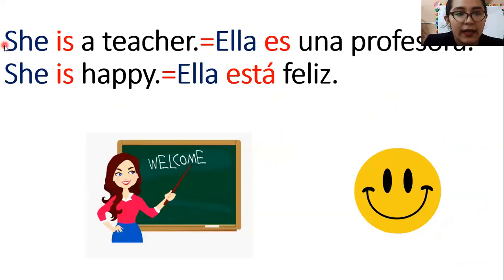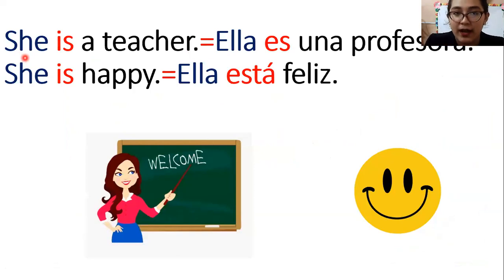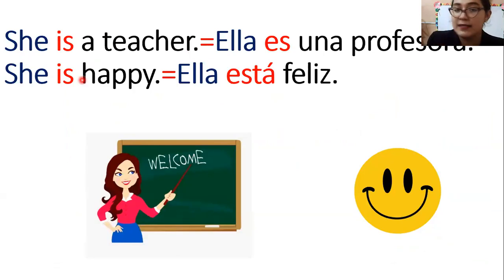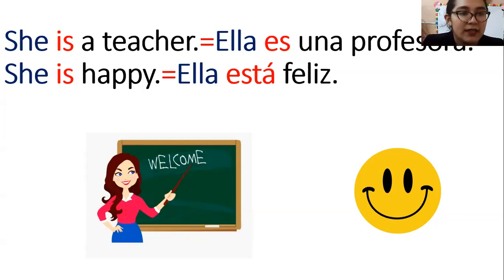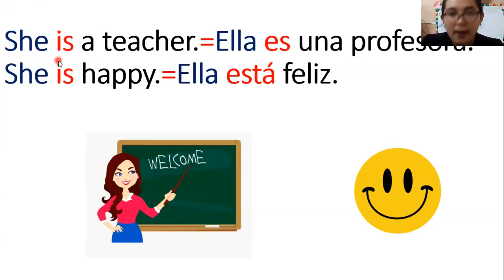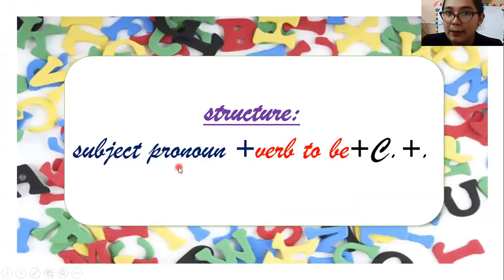Aquí tenemos los ejemplos, chicos. Nos dice she — la chica que ven ahí, ella — is a teacher. She is a teacher. Ella es una profesora. Esa es la primera forma: ser. Luego tenemos la segunda: she is happy. Ella está feliz — ser y estar. Como pueden notar, lo que está en color blue, tanto en inglés como en español, son los subject pronouns, los pronombres de sujeto, con los que comenzamos la oración. She — subject pronoun. Y luego viene el verbo to be is en color red.